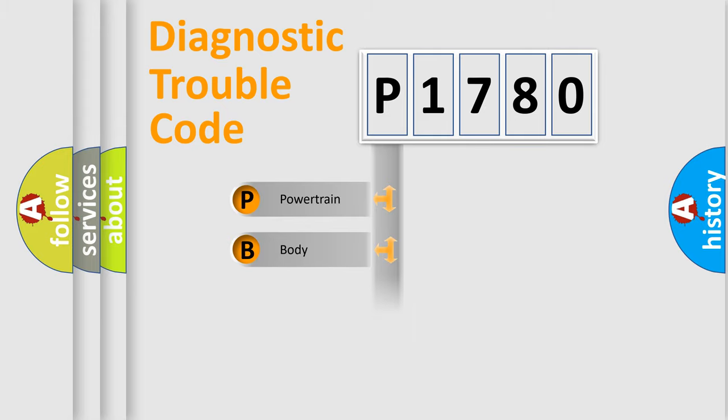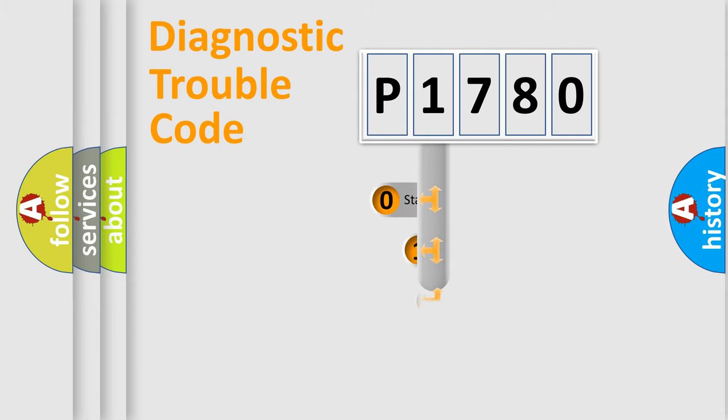Powertrain, Body, Chassis, Network. This distribution is defined in the first character code.